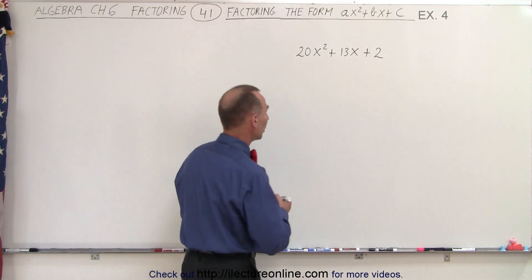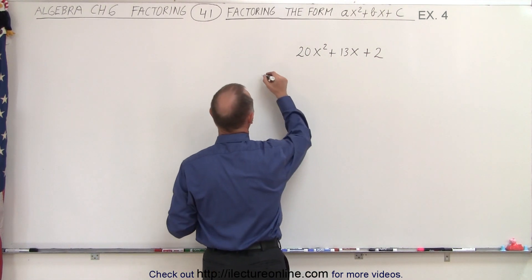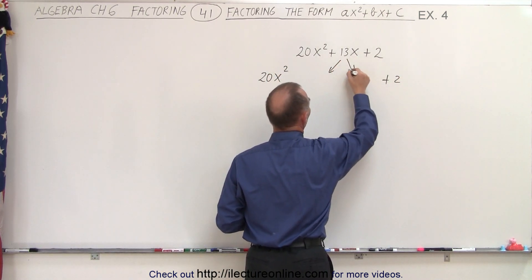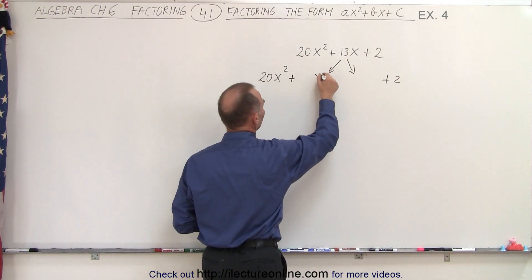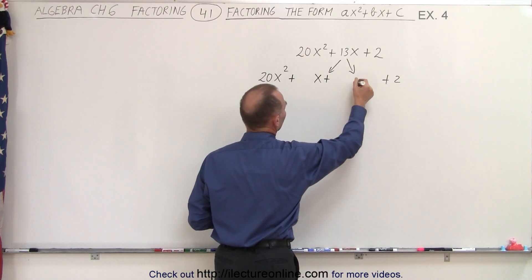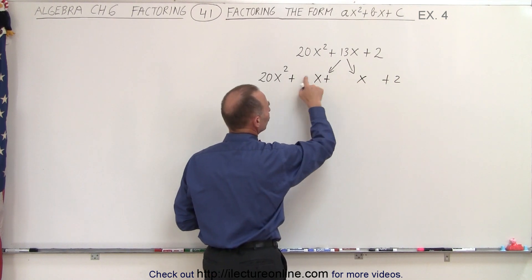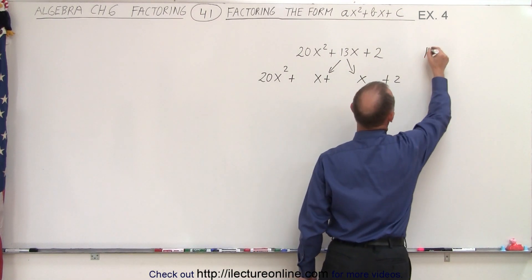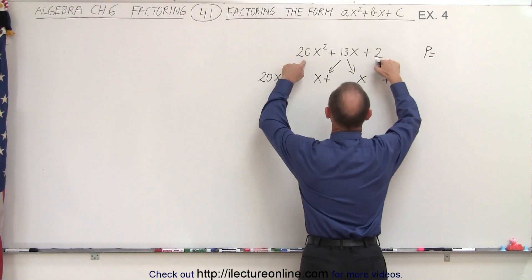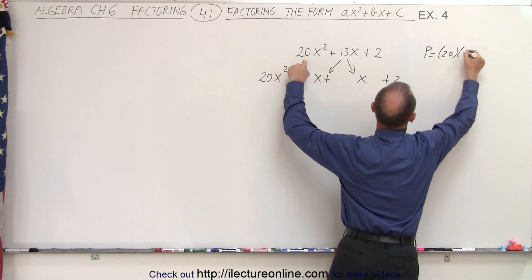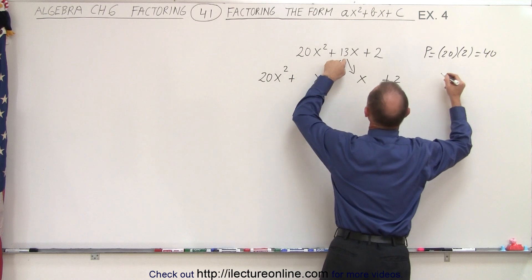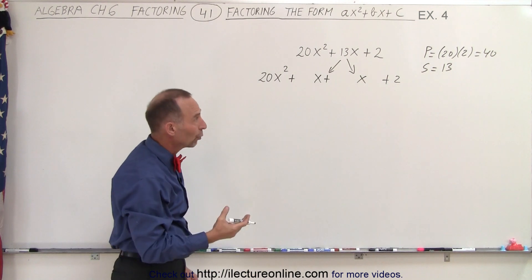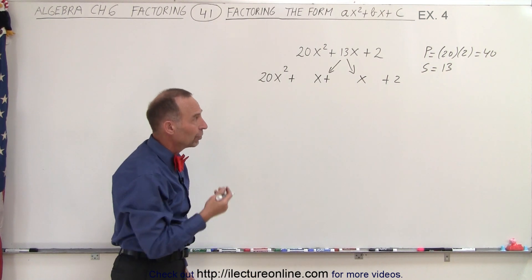We're looking for two numbers. What we're going to do is rewrite this as 20x squared plus 2, and the middle term will now become the sum of two middle terms — something x plus something x. So I'm looking for two numerical coefficients whose product equals 20 times 2, which is 40, and whose sum equals 13.